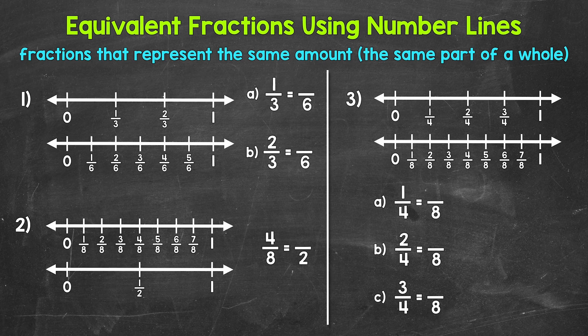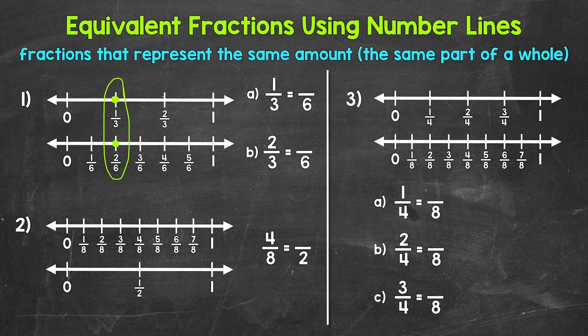Let's start with part A of number 1. 1 third is equivalent to how many sixths? Looking at 1 third right here, right below we can see that 2 sixths is at the same place on the number line. 1 third and 2 sixths are at the same place between 0 and 1 — they are the same distance from 0 — so they are equivalent fractions.